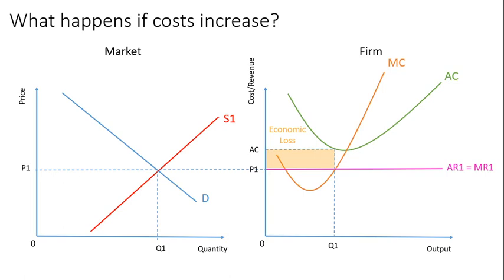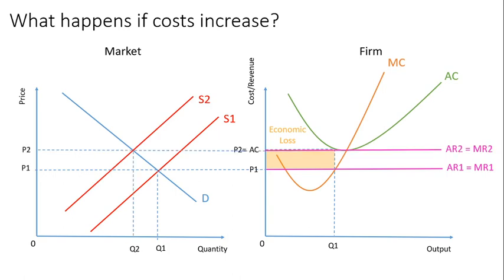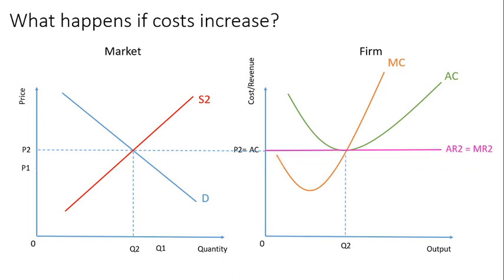Firms will exit the market in that case. Firms exit, the supply curve shifts left, the price then increases, and at the new higher price we have a new quantity — and it all sorts itself out again. That's the mechanics of it.